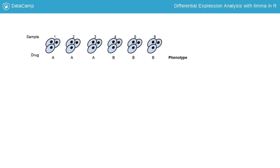Imagine a hypothetical experiment in which the researcher has treated cells with two different drugs, A and B. The drug treatment is the variable of interest and is an example of a phenotype.